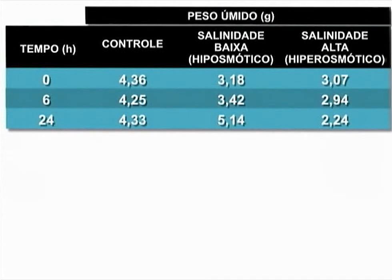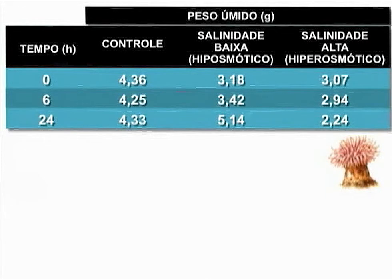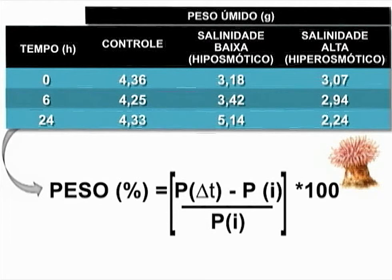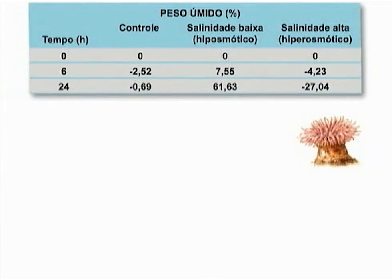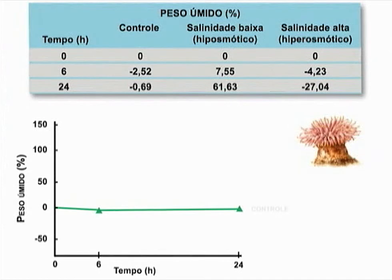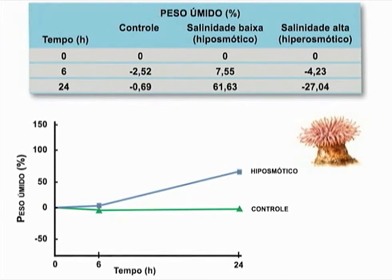Por fim, analisaremos os resultados das anêmonas. Observamos aqui os pesos brutos dos animais nas diferentes salinidades e diferentes tempos. Novamente, transformaremos os dados utilizando a fórmula. Quando plotamos no gráfico a variação percentual do peso, observamos que no choque hiposmótico o animal varia mais o seu peso do que quando submetido ao choque hiperosmótico.